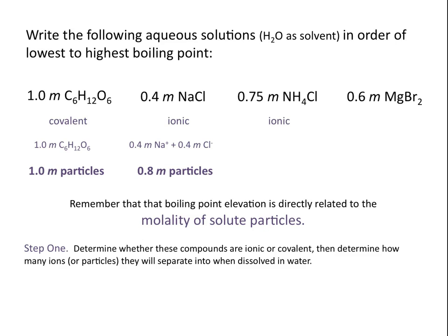NH₄Cl is also an ionic compound. Remember that NH₄ is a polyatomic ion — ammonium — so this compound ionizes in water to give 0.75 molal NH₄⁺ and 0.75 molal Cl⁻, for a total of 1.5 molal particles. Magnesium bromide is also an ionic compound that ionizes in water to give 0.6 molal magnesium ions and 1.2 molal bromine ions, because when magnesium bromide ionizes you get 1 magnesium and 2 bromine ions, giving a total of 1.8 molal particles.